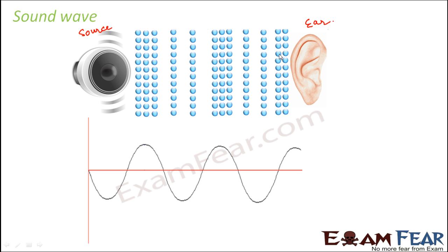It is a disturbance which makes the particles of the medium vibrate. These blue dots you see here represent the particles of the medium. As shown in a previous slide, the particles vibrate, and when you look at the overall picture, in some regions the density is very high and in some regions the density is quite low, alternating between more and less particles throughout.